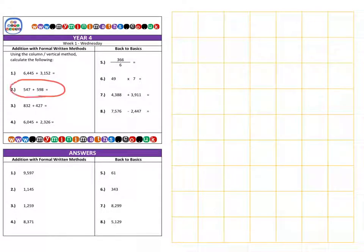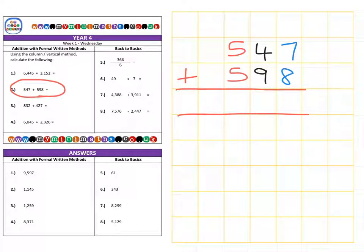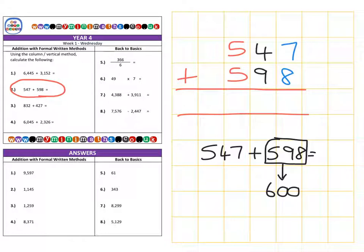And next we're on to question two which is 547 add 598. Now before we look at the written method using our columns, one thing we can do is take the calculation of 547 add 598. And if we look at this number here we recognize quite quickly that it's very, very close to 600 which is a nice round number. And if we look at adding our 547 to this new 600 here we get a final answer of 1,147.